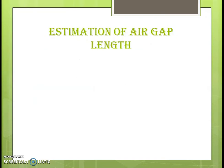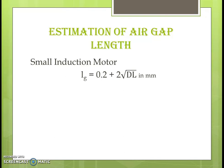How do we estimate air gap length? We have an empirical formula that we normally follow to calculate air gap length. In the case of a smaller induction motor, the equation is: LG = 0.2 + 2√(D×L), where D is the bore diameter in meters, L is the stator core length in meters, and the answer for air gap length LG is in millimeters.